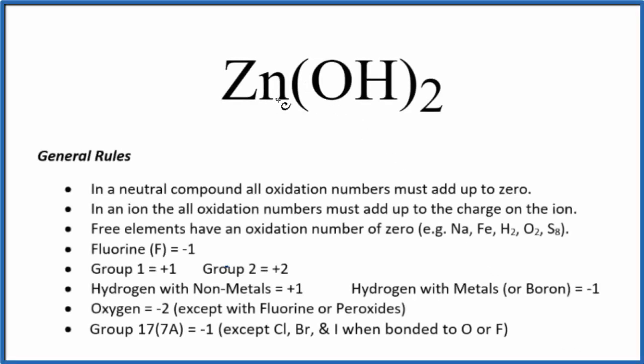To find the oxidation numbers for Zn(OH)₂, this is zinc hydroxide, we'll use these rules here. We note that there's no negative or positive sign after the zinc hydroxide. That's because it's a neutral compound. All the oxidation numbers are going to add up to zero.